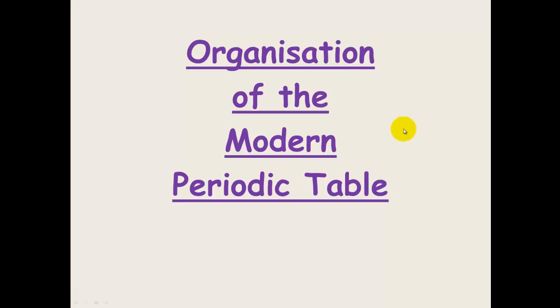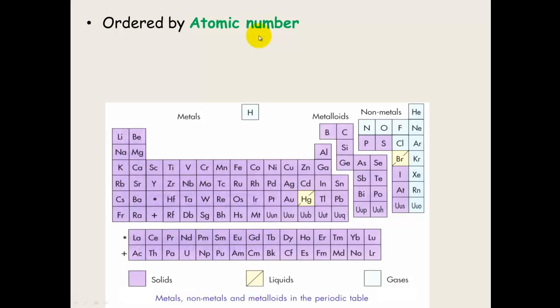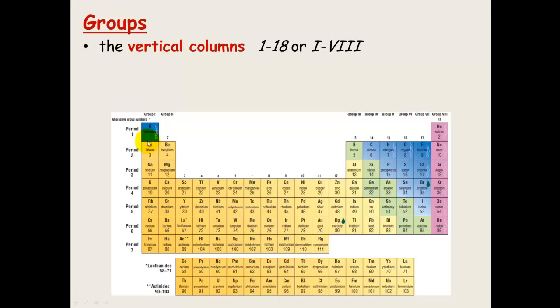So how is the modern periodic table organized? So we now order them by increasing atomic number, which we know is the number of protons. We divide the periodic table into the group of metals, non-metals which are on your right-hand side, and of course the metalloids here, which is this group that stands out.